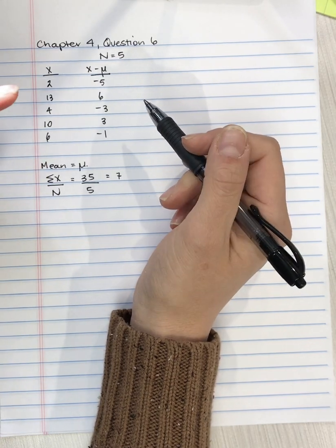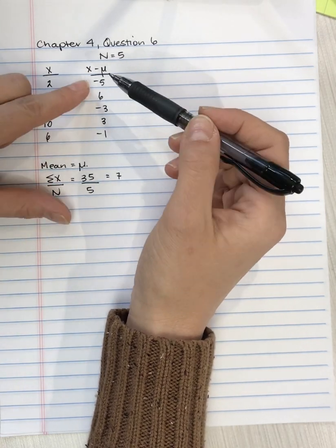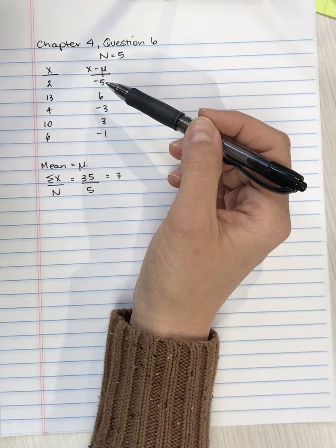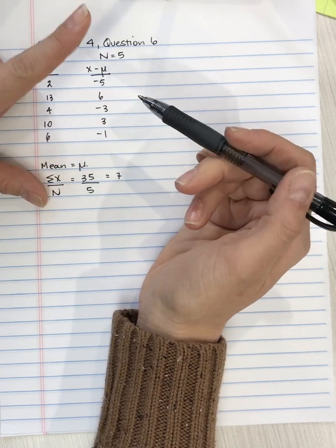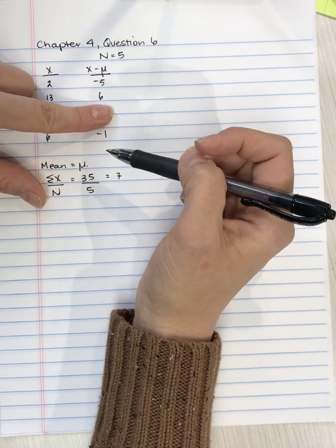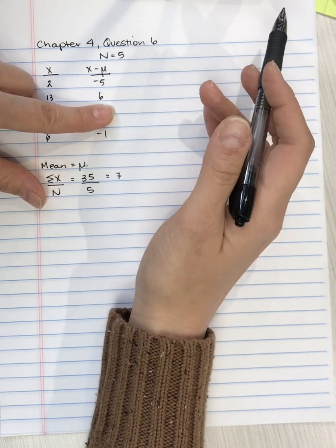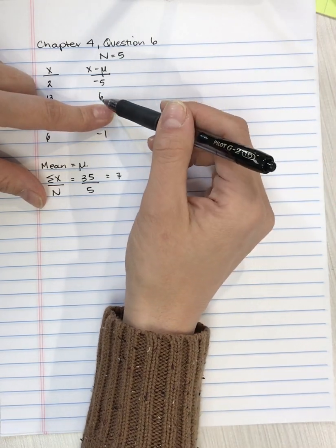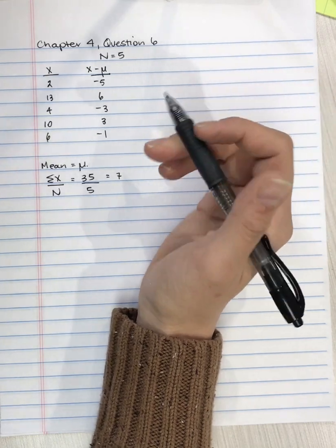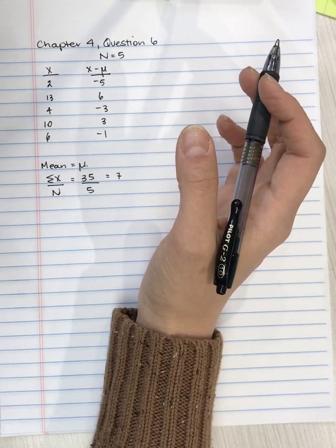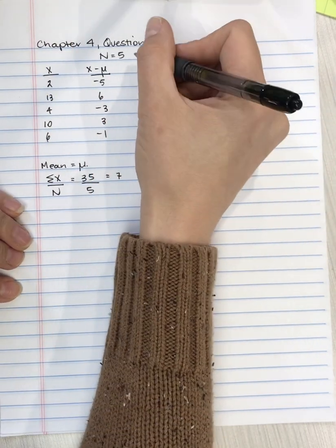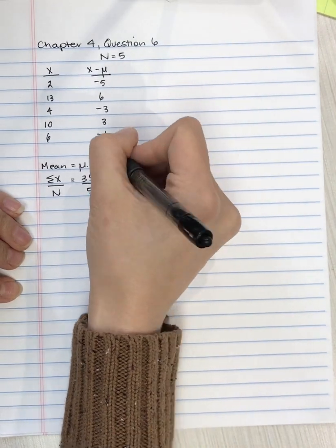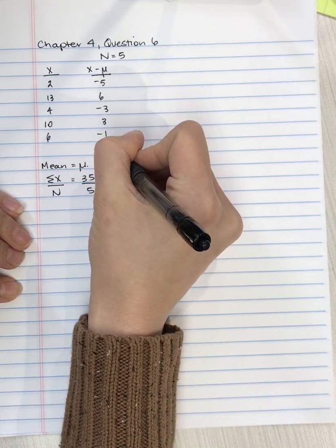If we want to double check whether or not we've done this correct, we can add up this column, and it should equal 0. So these two 3's cancel out, negative 1 and negative 5 are negative 6, and then 6 is 6. So it does add up to 0, which is a good check. So this is step 1.